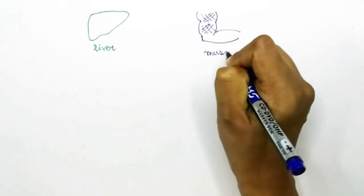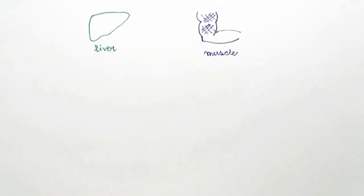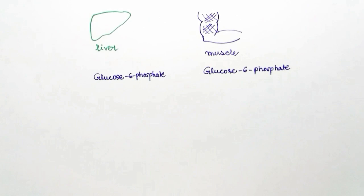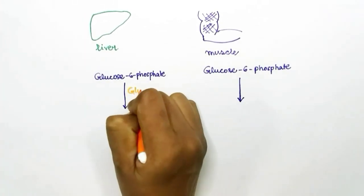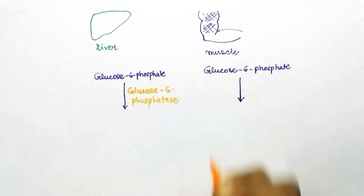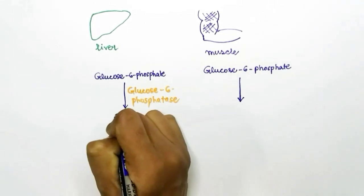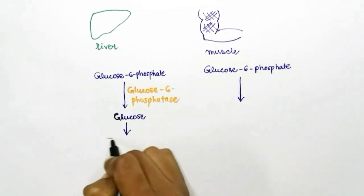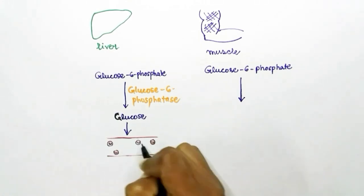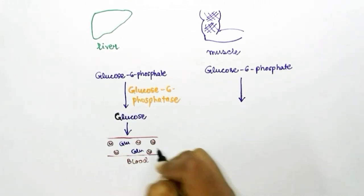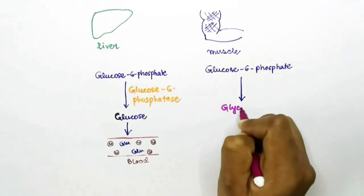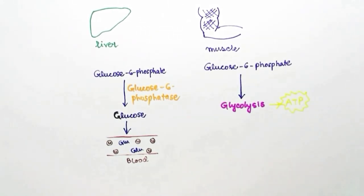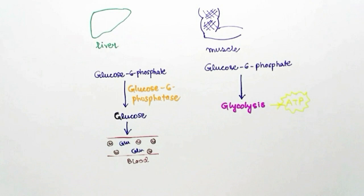This product is utilized differently in liver and muscle cells. In liver cells, the enzyme glucose-6-phosphatase converts glucose-6-phosphate into glucose, allowing the liver to release glucose into the bloodstream and raise blood glucose levels. This enzyme is absent in muscle cells, so muscle cannot convert glucose-6-phosphate to free glucose.